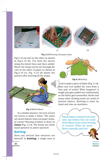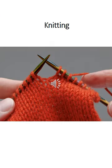A single yarn gets pulled out continuously as the fabric gets unraveled. Socks and many other clothing items are made up of knitted fabrics. Knitting is done by hand and also on machines. In factories, they use machines for knitting the woolen clothes.